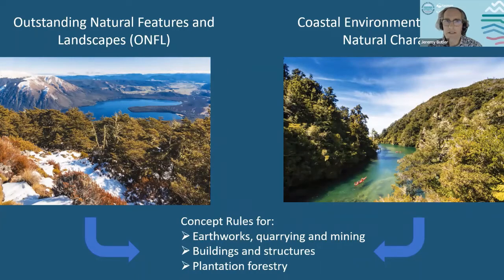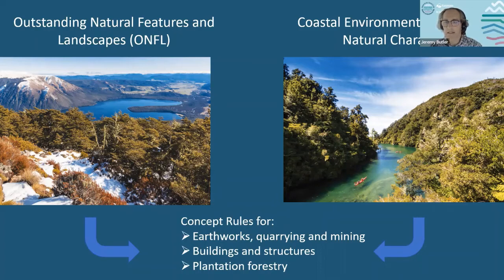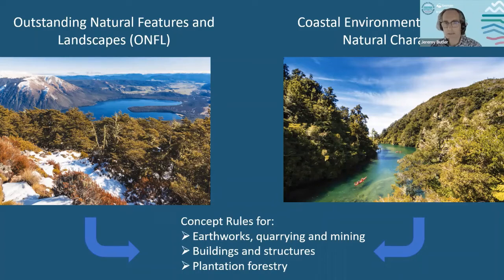Another matter covered in the discussion document is outstanding natural features and landscapes, the coastal environment, and coastal natural character. This has been a really big project for several years — looking at our precious landscapes and places in Tasman that are required under legislation to have a level of protection. The project involved firstly identifying where these areas are, and then coming up with a framework for how they are to be protected but also what they can be used for. In the discussion document there are concept rules for earthworks, quarrying and mining, buildings and structures, and plantation forestry.